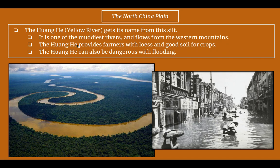The Huanghe, within the North China plain, gets its name 'yellow river' from the silt within the river. It is one of the muddiest rivers in the world and flows from the western mountaintops. The Huanghe provides farmers with loess — good soil for crops — but it can also be dangerous with its frequent flooding, which is also where it gets another nickname: 'China's sorrow,' because of all the destruction it can cause.